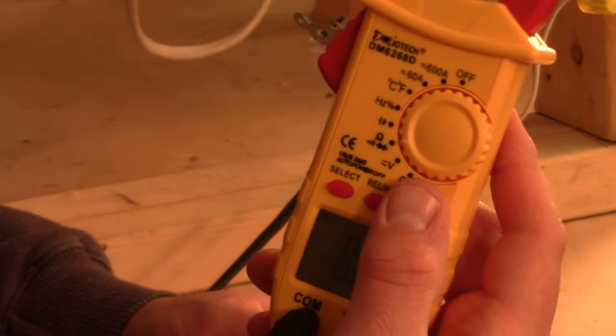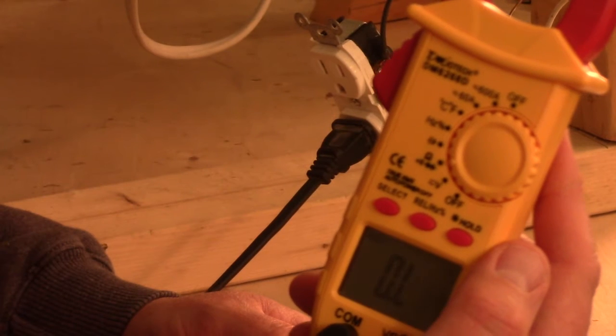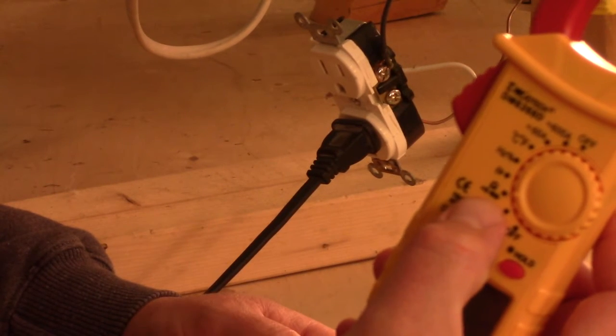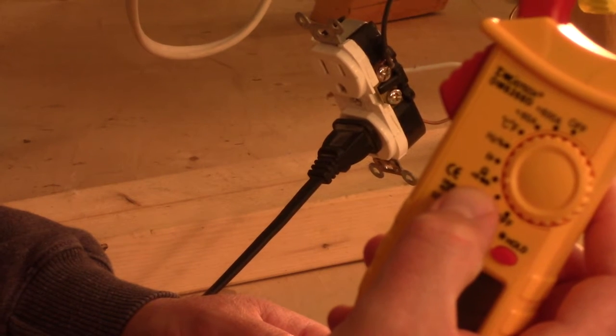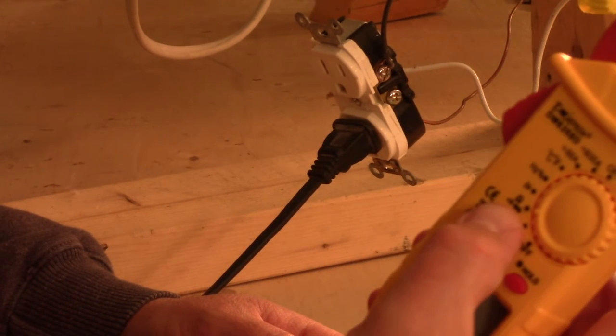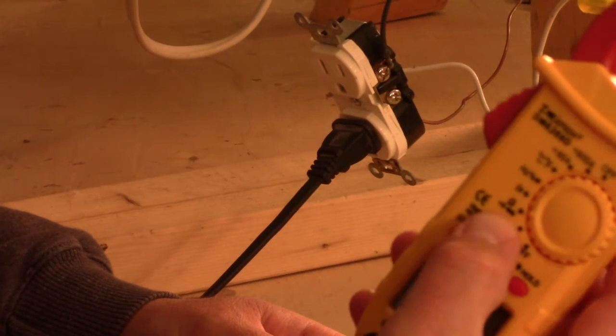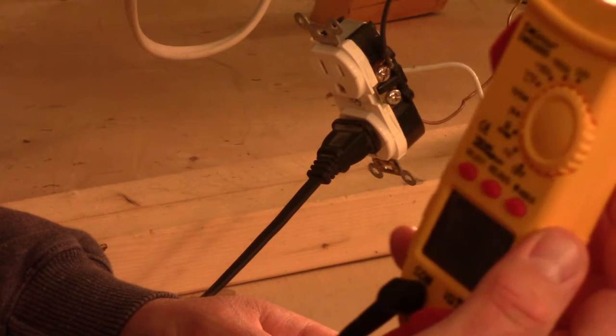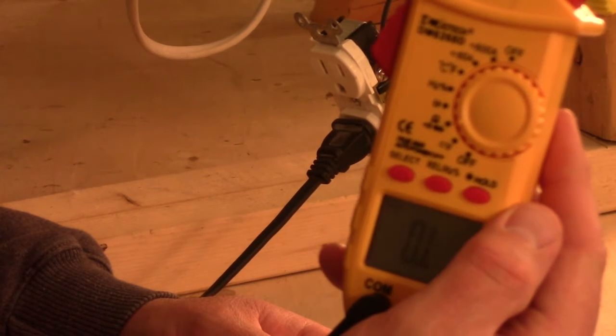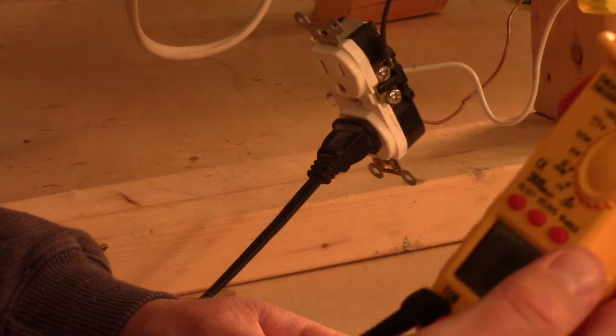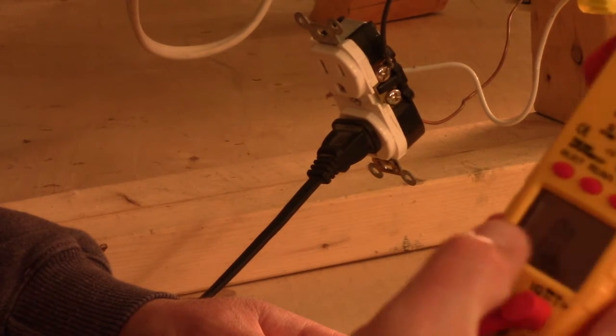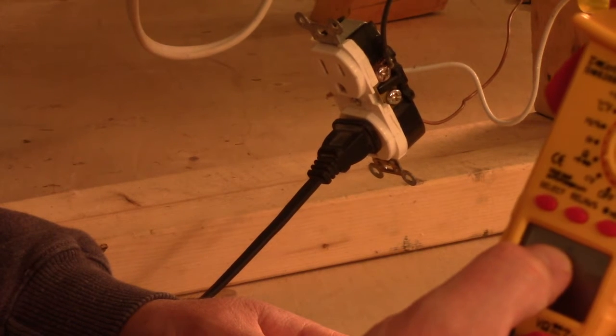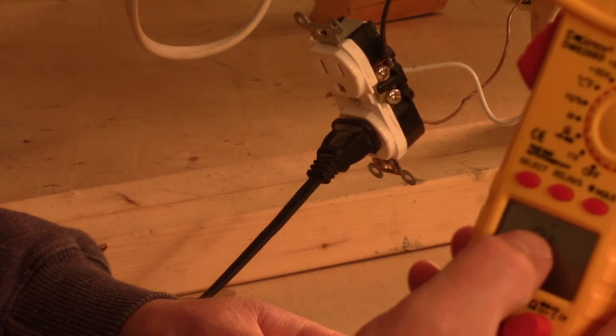The next setting that you click to is going to be your resistance or your continuity setting. Now, this setting right here is actually for diodes, testing diodes, but I don't usually work with stuff like that. This is where a technician may use it, or somebody doing some more electronic troubleshooting. For your typical homeowner, what we're going to use that to test for would be for continuity. To get what we want to do, we want to hit the select button, and it brings up a little speaker up here at the top on the screen.